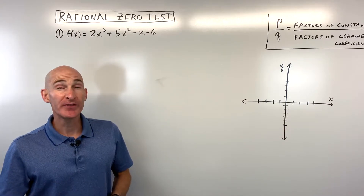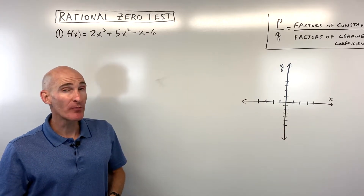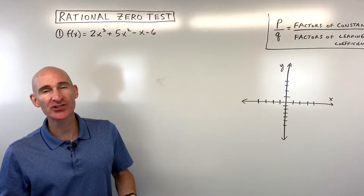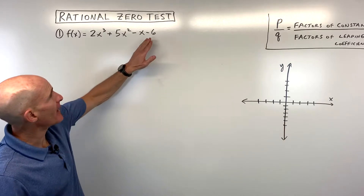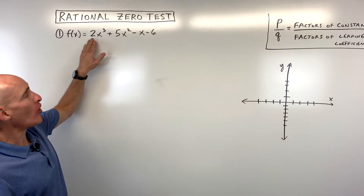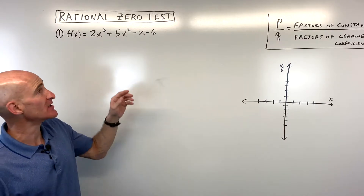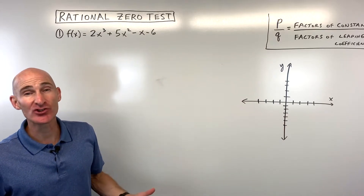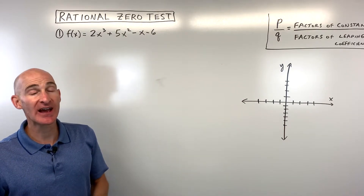In this video, you're going to learn how to work with the rational zero test. When you're working with polynomials, if you want to find the possible rational zeros, what you do is you take all the factors of the constant divided by all the factors of the leading coefficient. This only works if the coefficients — the numbers in front of the variables — are integers. If they're radicals or imaginary numbers, this is not going to work.